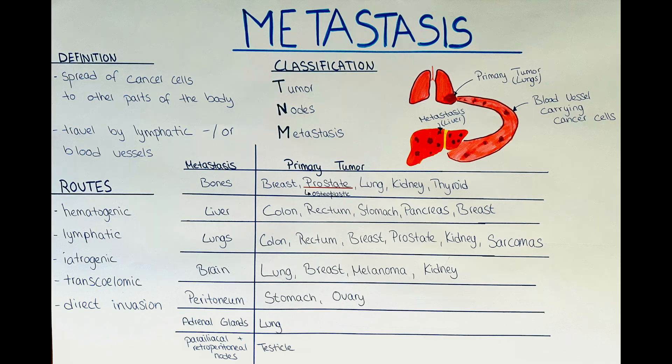However, unfortunately there is a limitation to this. Some cancer cells become so altered that they lose the distinct features of their original tissue. This is then known as an undifferentiated cancer. When a metastasis is composed of undifferentiated cells it can be very difficult to determine where the cancer originated from.